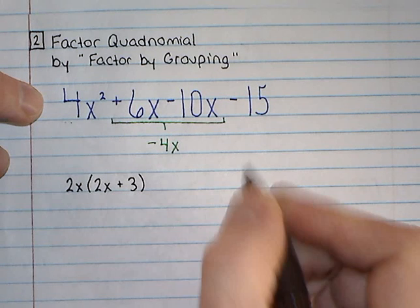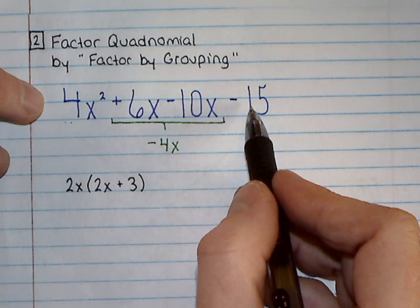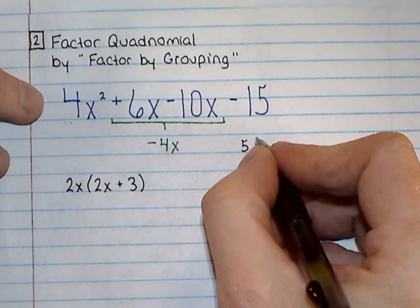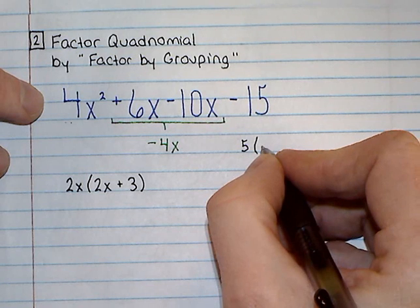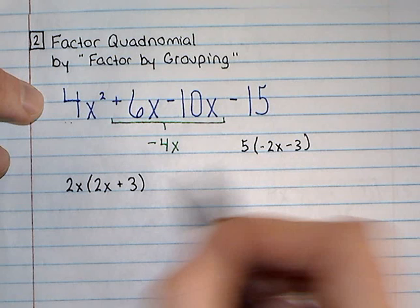So then I look at my second pair, negative 10x minus 15. What do they have in common? Well, I could pull out a 5. If I pulled out a 5, that would leave me with a negative 2x minus 3. But that's not the same binomial as this.